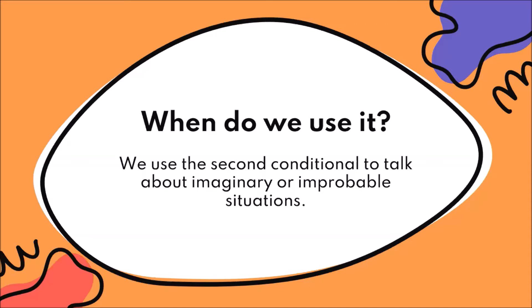We use the second conditional to talk about things that are imaginary or not happening in this moment — for example, to talk about winning the lottery, being president, or having a time machine. It's like putting yourself in a situation: if I won the lottery, I would do this.